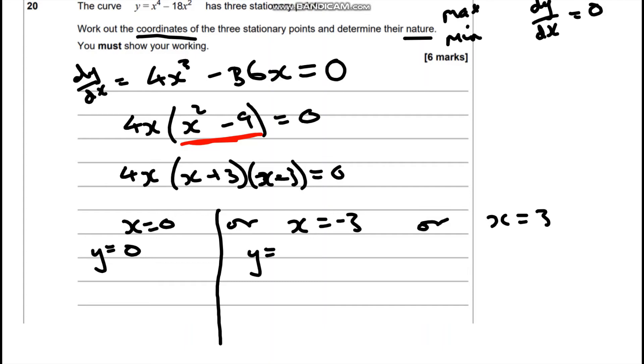So we're going to do y equals negative 3 to the power of 4 take away 18 lots of negative 3 squared. So negative 3 to the power of 4, so we've got 3 times 3 is 9, times 3 is 27, times 3 is 81. Here we have got negative 3 squared, so that's going to be positive 9. So positive 9 times 18 is going to give me 162. So this is going to give me a value of negative 81.